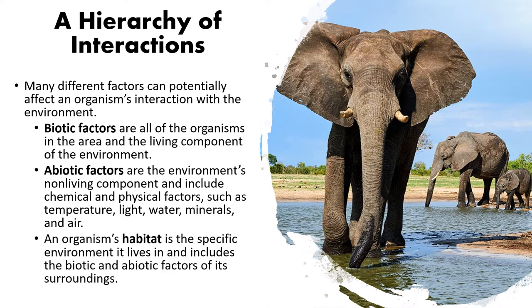When we talk about organisms, we say they live in a habitat — a specific type of environment that includes a variety of biotic and abiotic factors. If we're talking about elephants, we need to know what types of trees are there for them to feed on, what other animals are around, the water and temperature levels. All of that together constitutes the habitat.